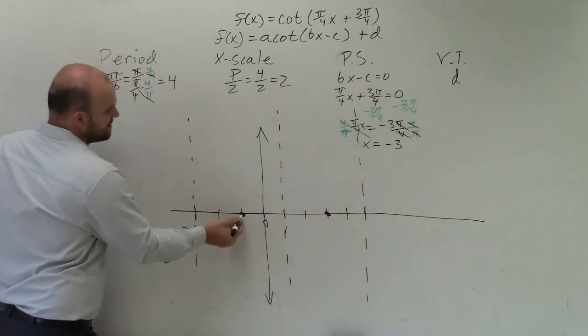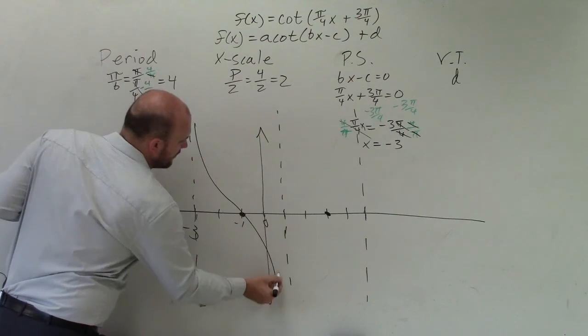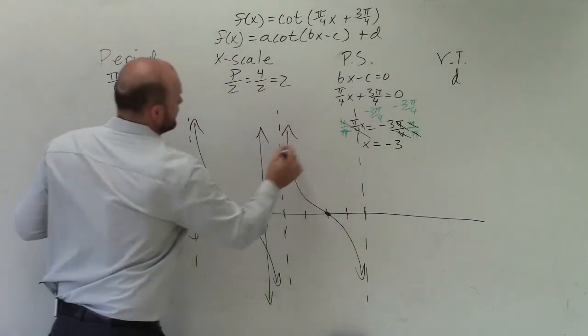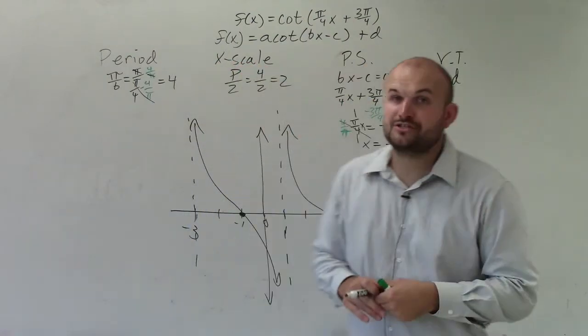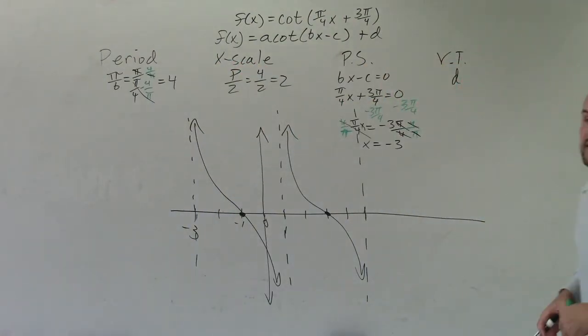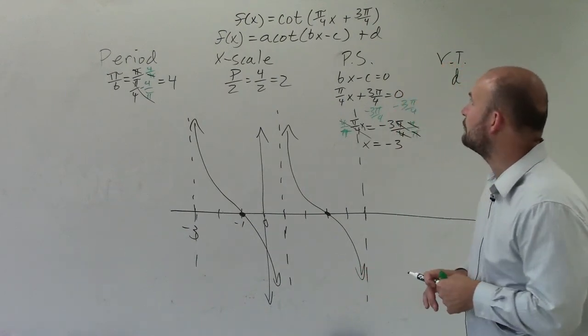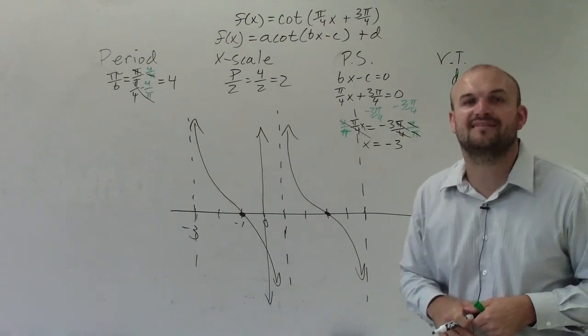So now, I just make sure the graph goes through there. It rises to the left, falls to the right, and approaches the two asymptotes. And there you go, ladies and gentlemen. That is the way that you can graph f of x equals cotangent of pi over 4x plus 3 pi over 4. Thanks.